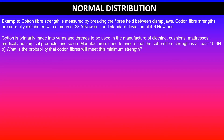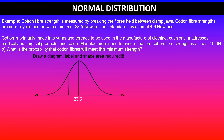The question asks: what is the probability that codon fibers will meet this minimum strength requirement? You need to draw a diagram, label it, and shade the required area. We have a mean value of 23.5, and since 18.3 is below 23.5, we place it to the left. Since we need at least 18.3, that's the minimum, so we shade the right-hand side of 18.3.